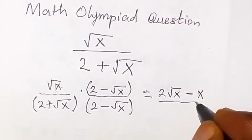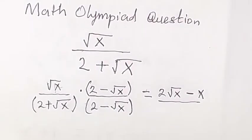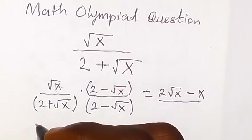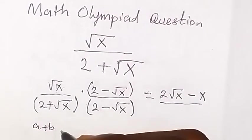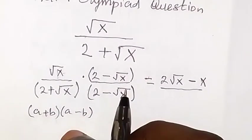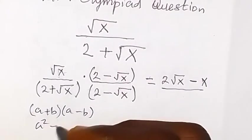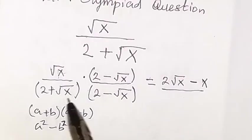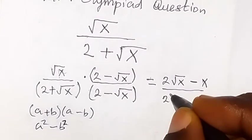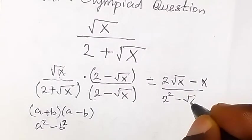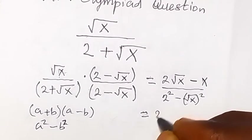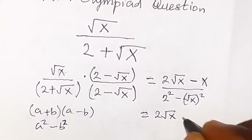Then divide it by what we have in our denominator here, like we have in difference of two squares. When we have a plus b times a minus b, we know from difference of two squares that this is the same as a square minus b square. So this will be 2 square minus root x squared. When we simplify this, this will be the same thing as 2 root x minus x.